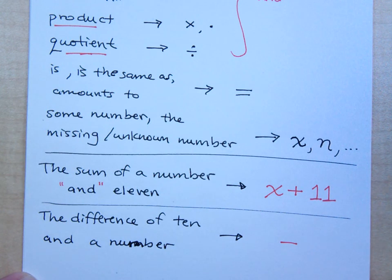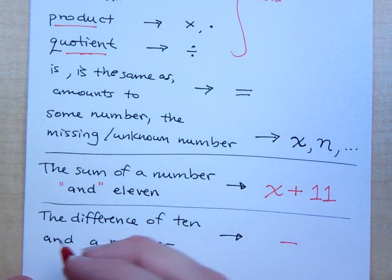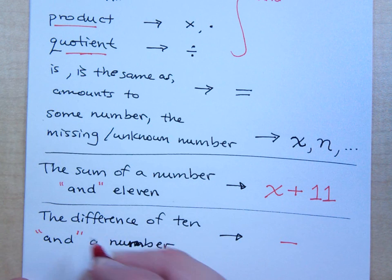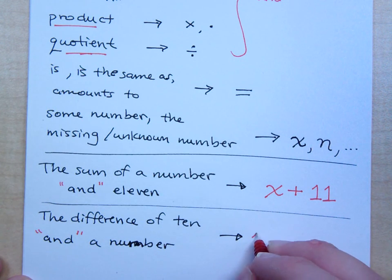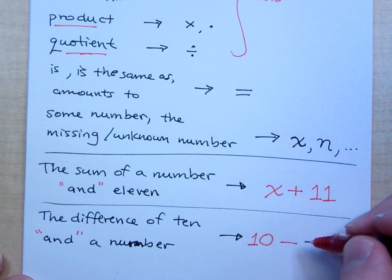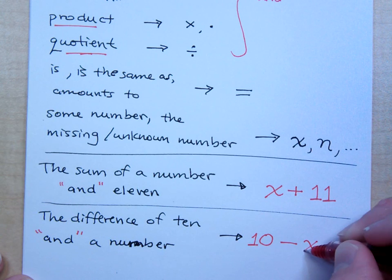And then I immediately look for the word and. Because the word and will help me separate the left and the right part of the difference. So here's the word and. What comes before the word and? So before the subtraction symbol I write ten. What do I write after the subtraction symbol? Just X.